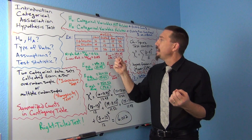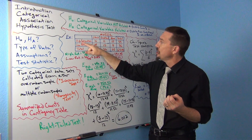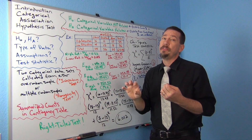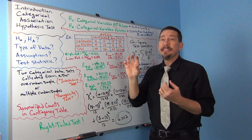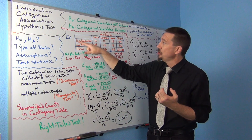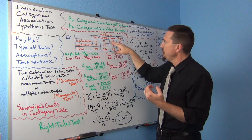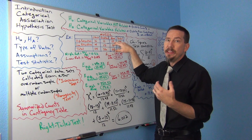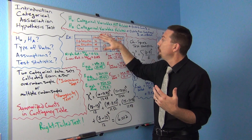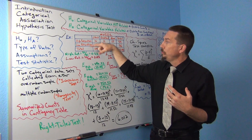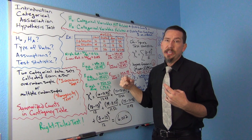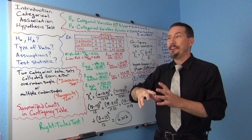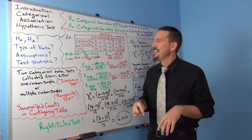A lot of people ask how to know if it's a goodness of fit test or a categorical association test. If your data is a contingency table, you're doing the categorical association test. If you're only looking at observed counts from one particular variable — like just high retention counts such as 10, 11, and 18 — that's goodness of fit. But if you have more data dealing with different retention levels, that graduates to the categorical association test.